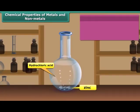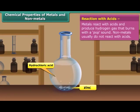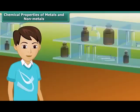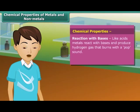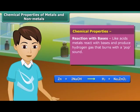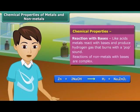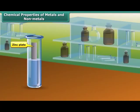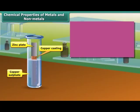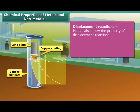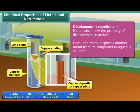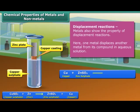Now let's know about the reaction of metals and non-metals with acids. Metals react with acids and produce hydrogen gas, while non-metals don't react with acids. Metals also react with bases and produce hydrogen gas. Non-metals react with bases complexly. Besides these chemical reactions, metals also show the property of displacement reactions, in which one metal displaces another metal from its compound.